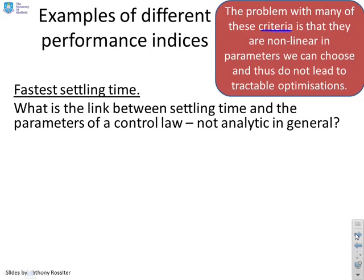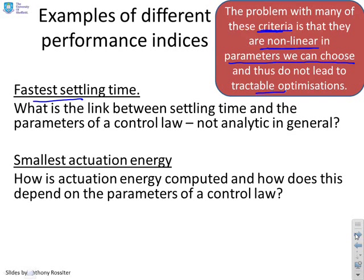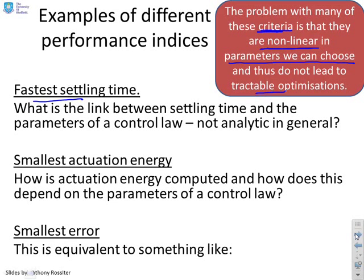So let's look at these in turn. And you'll see I'm summarising the problem, which is that the criteria you might use, many of them are non-linear in the parameters that you can choose. And therefore, they do not lead to tractable optimisations. So what's the link between settling time and the parameters of a control law? And you'll find in general, you will not find an analytic expression. What's the link between actuation energy and the parameters of the control law? And again, you'll find it's difficult to get an analytic expression. What about the smallest error? Something like the modulus. If you say by smallest error, I mean the integral of the modulus. And again, you'll find the relationship between that and the controller parameters is not usually linear. So we've got a problem.